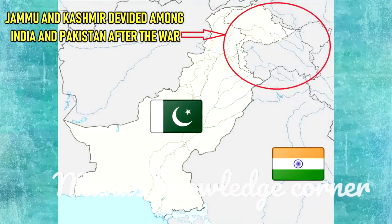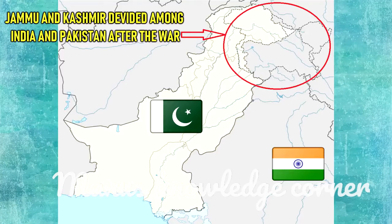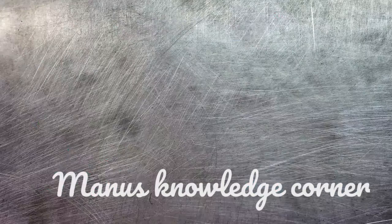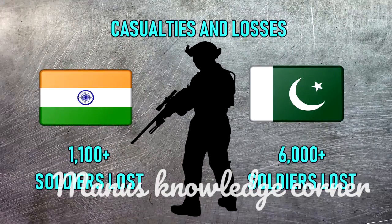Territorial changes: the UN ceasefire line of 1949 later became the Line of Control after the Simla Agreement of 1972. Pakistan controls roughly a third of Kashmir, whereas India controls the rest — the Kashmir Valley, Jammu, and Ladakh. Casualties and losses: India — 1,100 plus soldiers killed; Pakistan — 6,000 plus soldiers killed.